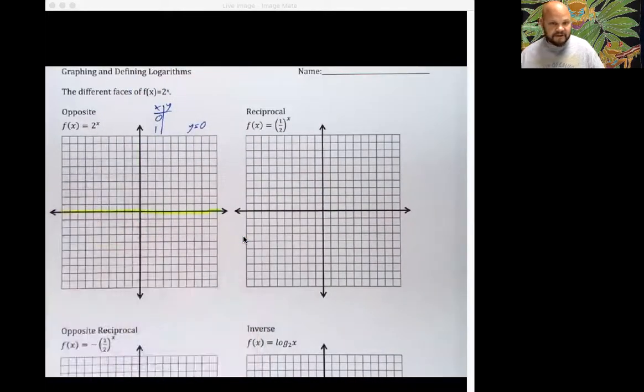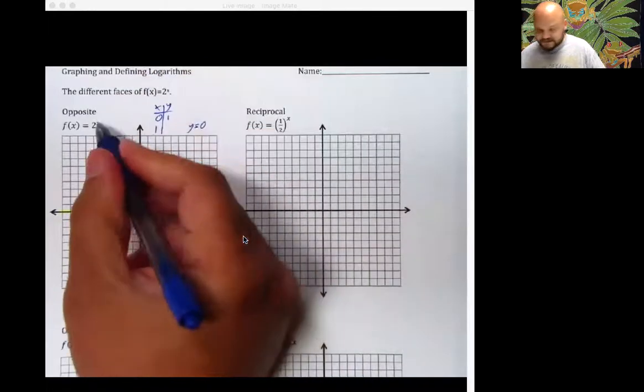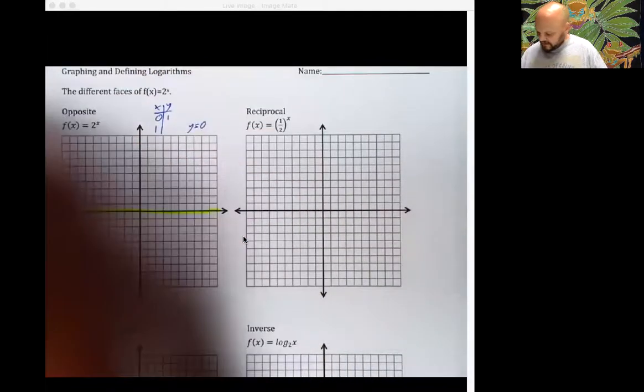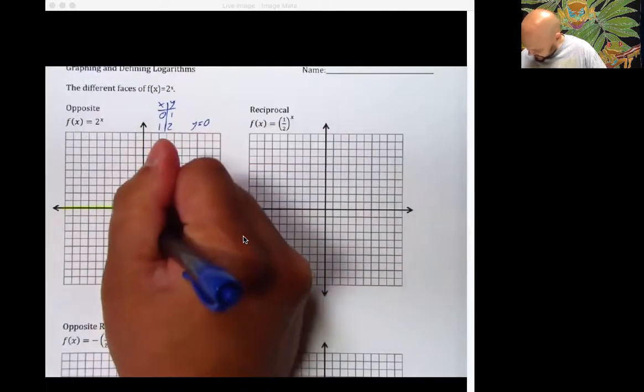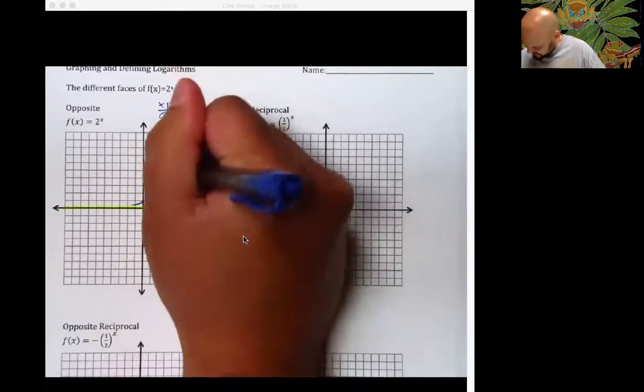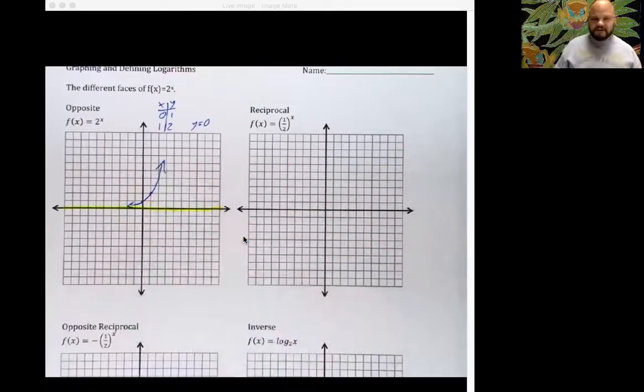When I plug in zero, I got two to the zero power. Two to the zero power is one. When I plug in the one, I've got two to the one power. Two to the one power is two. Presto, change-o. I should have an exponential function that is curving up like that. Flattens out this way, curves up that way. Good to go. There is f of x is equal to two to the x power.